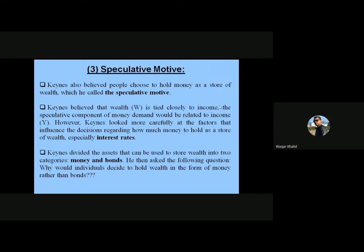The third motive is the speculative motive. Keynes believed that people choose to hoard money as a store of wealth, which he called the speculative motive. He believed wealth is tied closely to income, so the speculative component of money demand would be related to income. However, Keynes looked more carefully at the factors influencing the decision of how much money to hold as a store of wealth, especially interest rates. For this purpose he divided assets into two categories: money and bonds, then asked why individuals would hold wealth in the form of money rather than bonds.